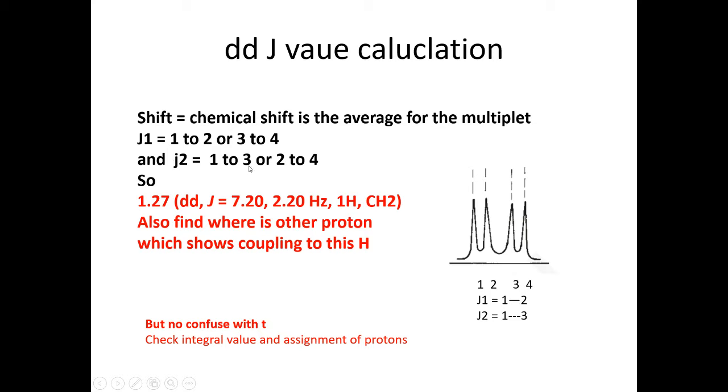The small J is here or here, and the large is 1 to 3 or 2 to 4. One should also find out where is the other proton in the spectra which shows coupling to this proton.